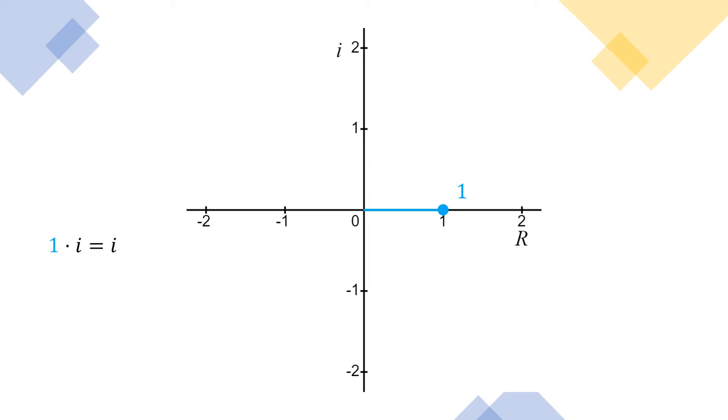So multiplying one by i gives us i. When we move our original number counterclockwise, we see that we're up along the imaginary axis now and our rotation has been 90 degrees counterclockwise. We can continue this process and multiply by i again and i times i is i squared, which is negative one.